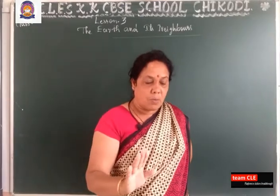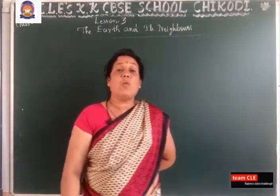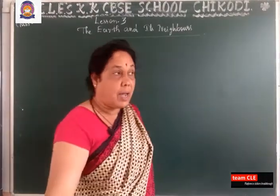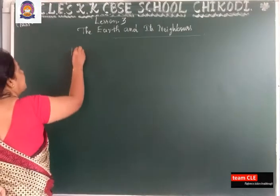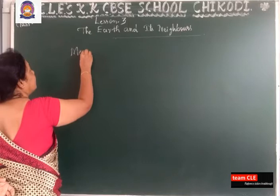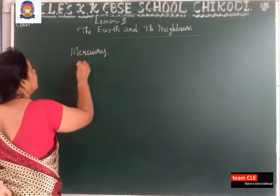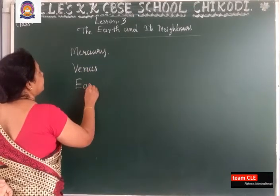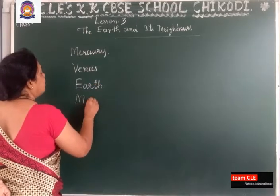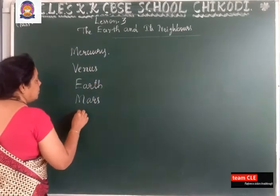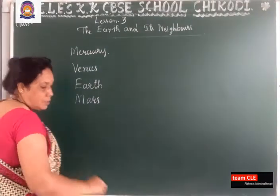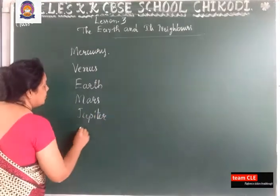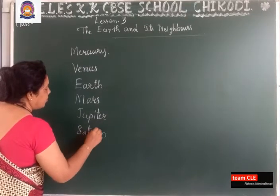All the planets do not have light of their own; we get light and warmth from the sun only. The 8 planets in the solar system are: Mercury, Venus, Earth, Mars, Jupiter, Saturn, Uranus, and Neptune.